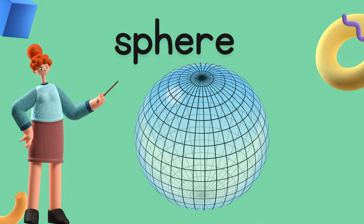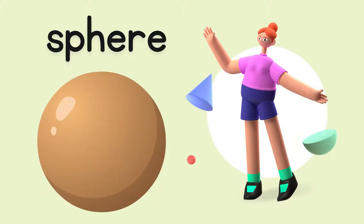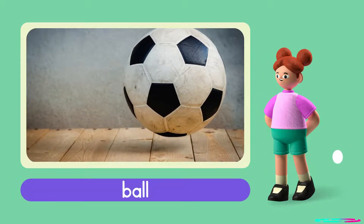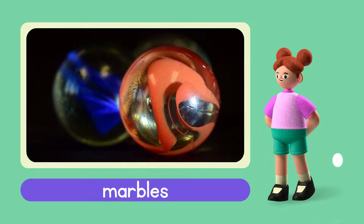Now look at this shape — say with me: Sphere. S-P-H-E-R-E. Sphere. Good job. This is an example of an object with the shape of a sphere. A ball has the shape of a sphere. Marbles also have the shape of a sphere.